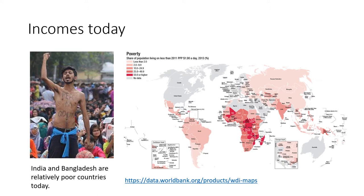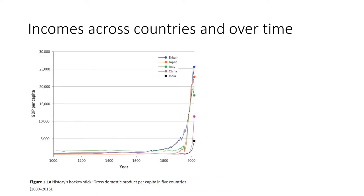Between 10 and 25% of the people of India and Bangladesh are living on less than $2 per day. One of the things we want to understand in economics is how it is that incomes have evolved across countries and over time. That's what the first figure in your readings for today shows: income per capita in Britain, Japan, Italy, China, and India over the last thousand years.